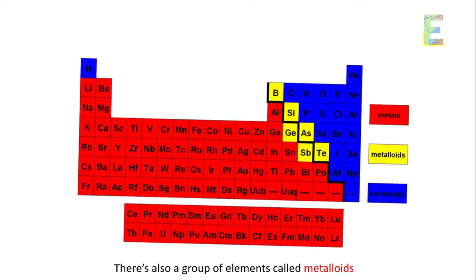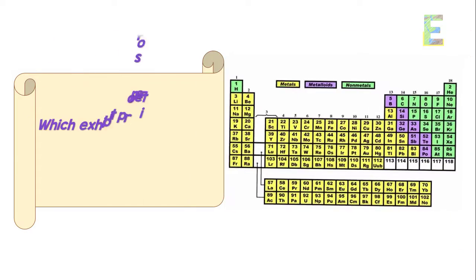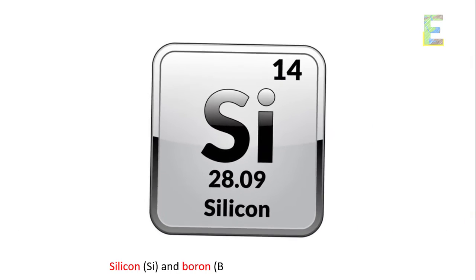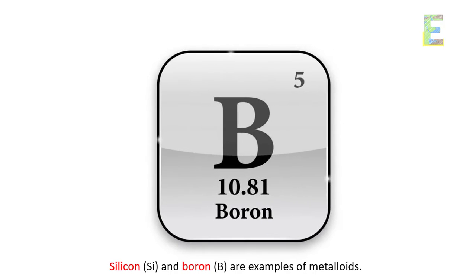Metalloids. There's also a group of elements called metalloids, which exhibit properties of both metals and non-metals. Silicon (Si) and boron (B) are examples of metalloids.